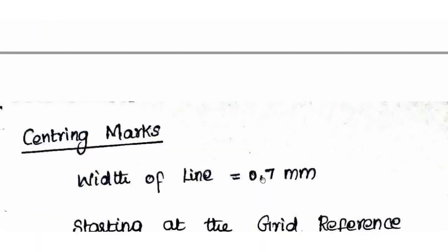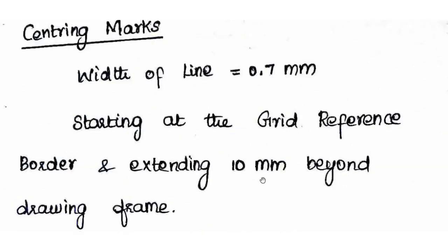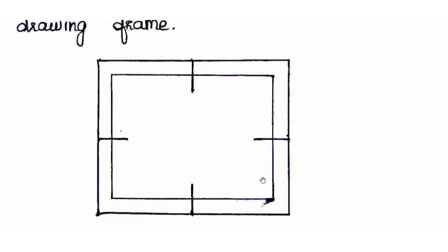Next are centering marks. The centering marks extend 10 mm into the drawing frame. The width of the frame line is 0.7 mm, while the grid reference system lines are 0.35 mm. Centering marks are used for reproduction and microfilm purposes, and they indicate the axis of symmetry at the center of each side.